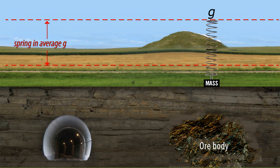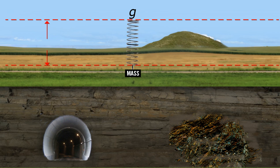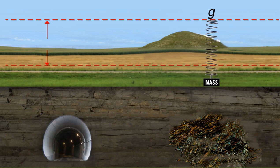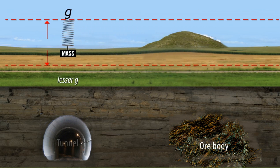An ore body is a zone of rock that contains a high concentration of minerals that would be worth mining. Further away from the ore body, g decreases. These two aspects of Newton's law explain why, if we wander the Earth with sensitive instruments measuring g, we'll see differences due to extra buried mass, like that ore body, or missing mass, like a tunnel. Missing mass in the Earth reduces the g nearby, thus it reduces the stretch in the spring.